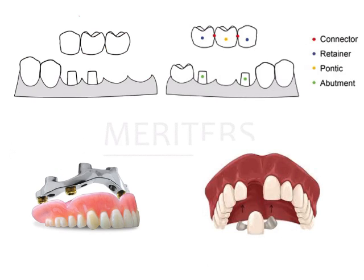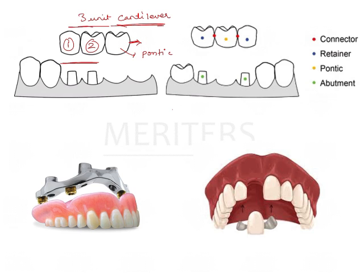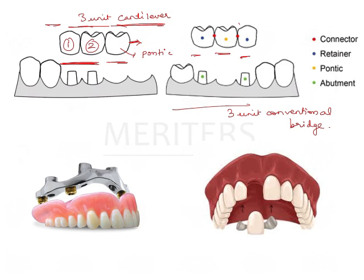This is a three-unit cantilever bridge. Cantilever need not necessarily be two-unit only — in this case there are one retainer, two retainers, and a pontic, but the pontic is not supported distally, so this is a three-unit cantilever bridge. This here is a three-unit conventional bridge: although there are two retainers and one pontic, the pontic here is supported by retainers on both sides — unlike the first image.